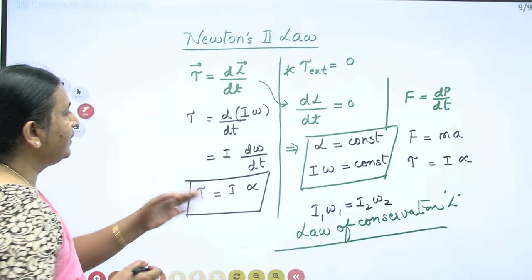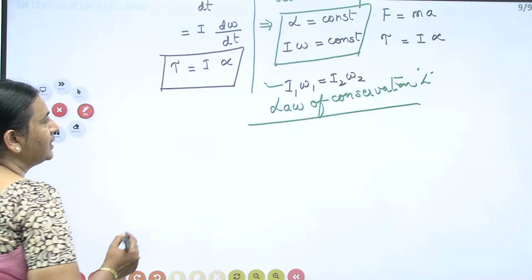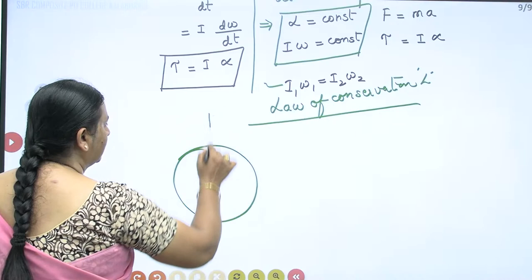Now once you apply this, you will get sometimes a very simple question. I will just show here. So what they do is, they will give a question like: you have an Earth of mass M and radius R.